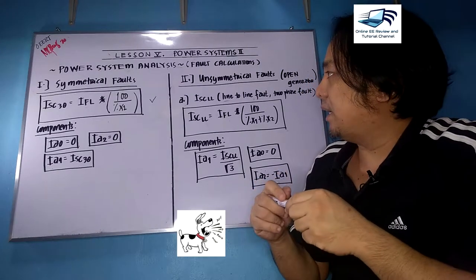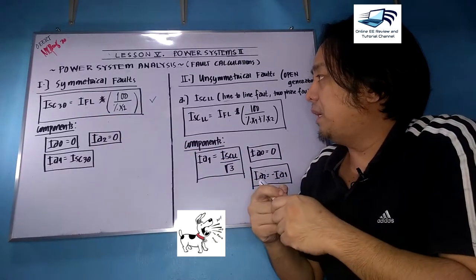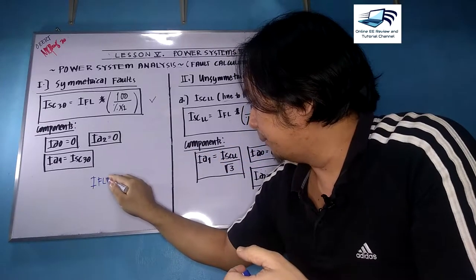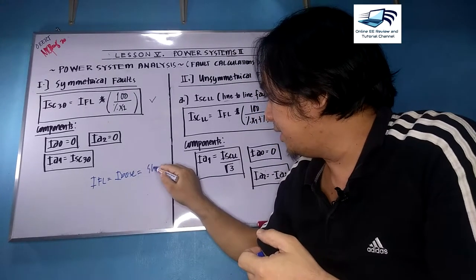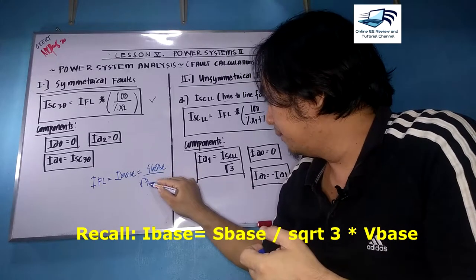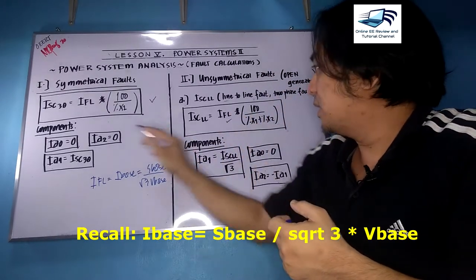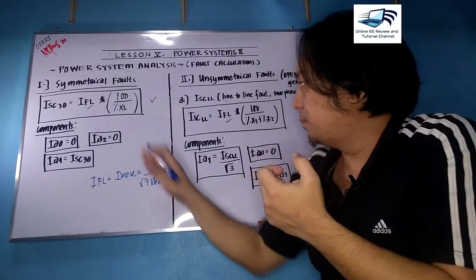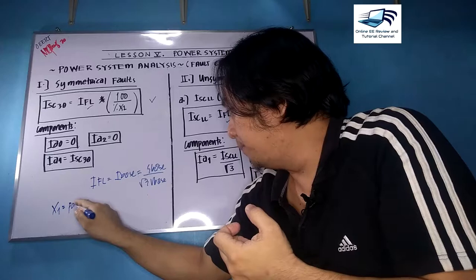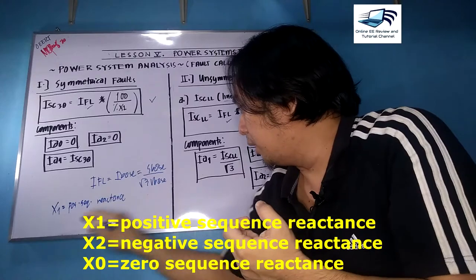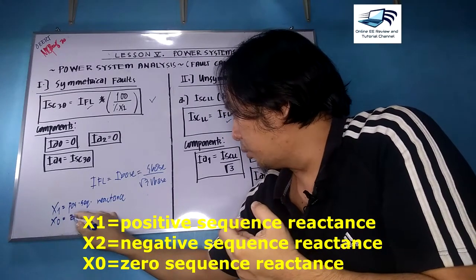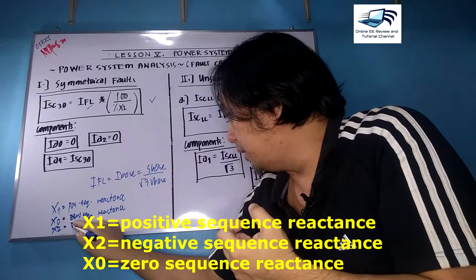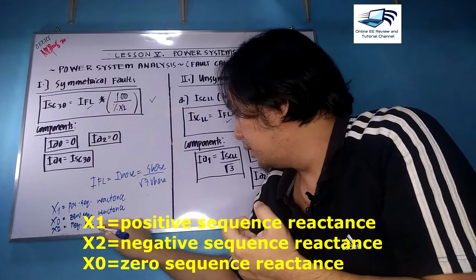For symmetrical faults, ISC is simply equal to I full load times 100 over percentage X1. Your I full load is your base current — I base equals S base over square root of 3 of V base. We also introduce some reactances: X1 is the positive sequence reactance, X0 is the zero sequence reactance, and X2 is the negative sequence reactance.